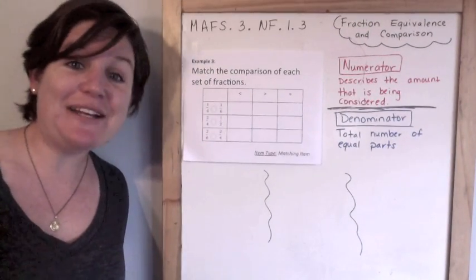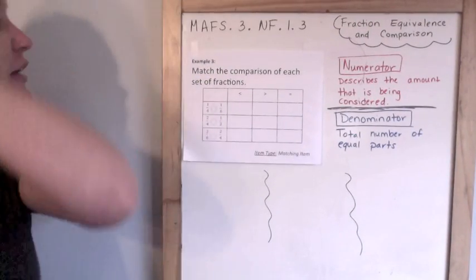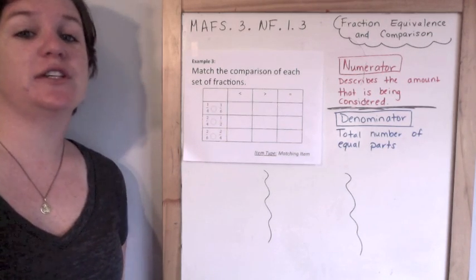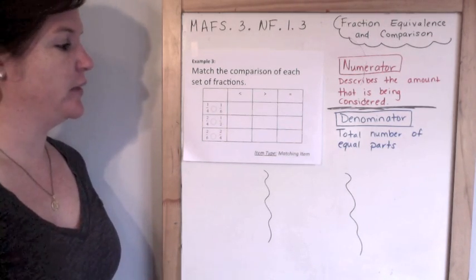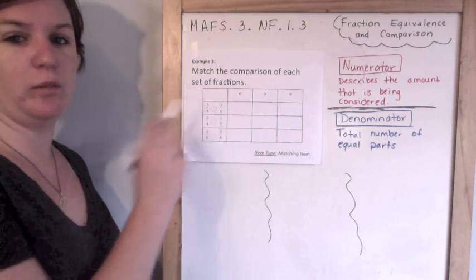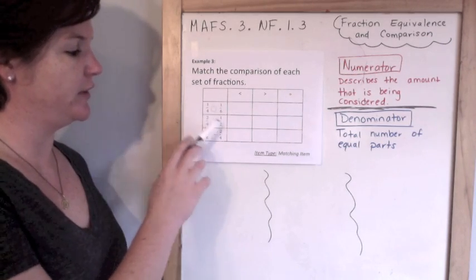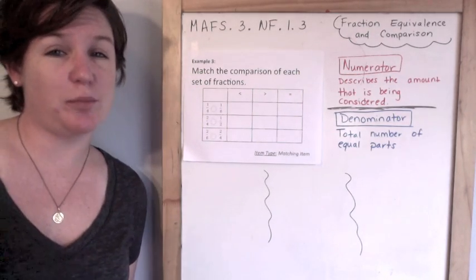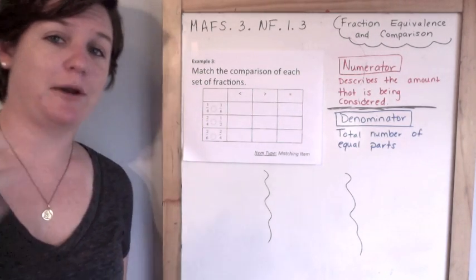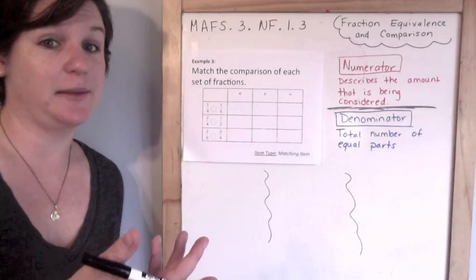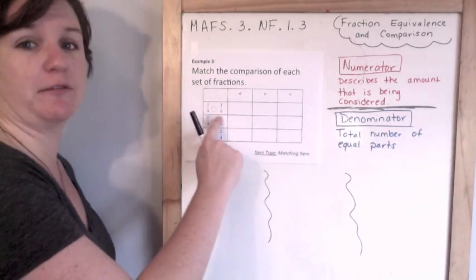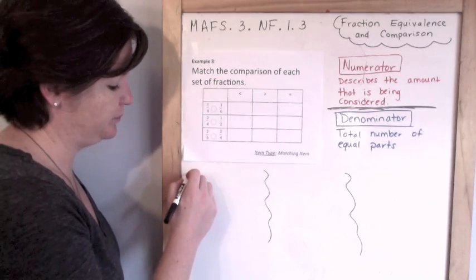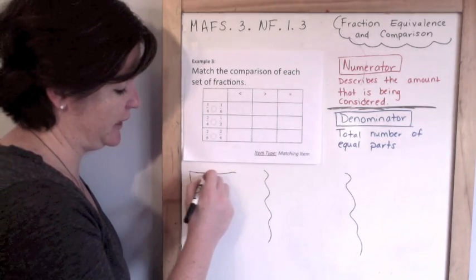Example three, and this time I get to draw out fractions, which I love to do. Match the comparisons of each set of fractions. So we have one fourth and one sixth, two fourths and one half, two sixths and two fourths. Now, if you're really good with fractions, you probably don't have to draw them out, but I'm going to show you what you could do to easily compare them.